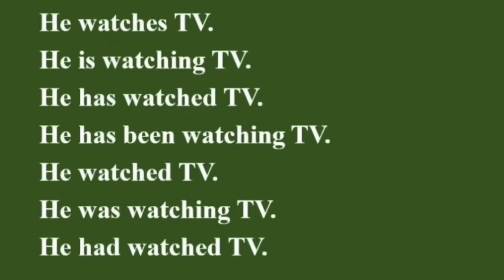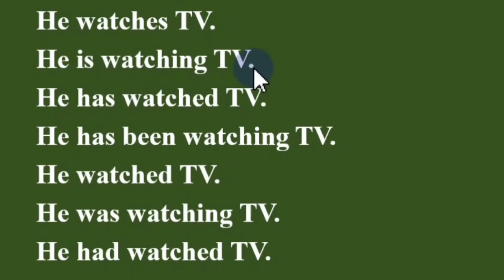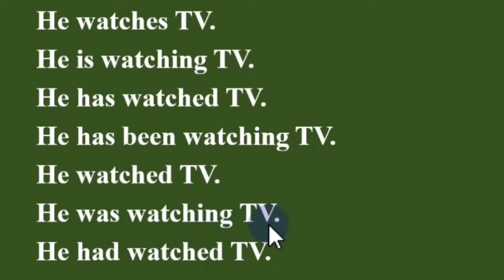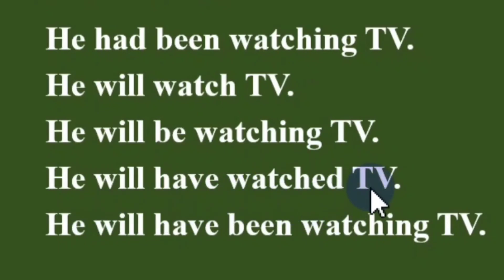So that's the summary. He watches TV: present simple. He is watching TV: present continuous. He has watched TV: present perfect. He has been watching TV: present perfect continuous. He watched TV: simple past. He was watching TV: past continuous. He had watched TV: past perfect. He had been watching TV: past perfect continuous. He will watch TV: simple future. He will be watching TV: future continuous. He will have watched TV: future perfect. He will have been watching TV: future perfect continuous.